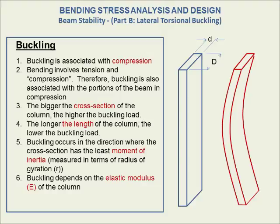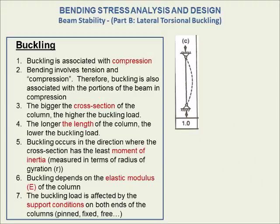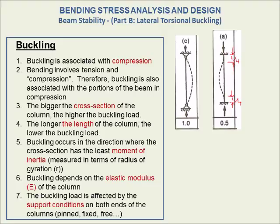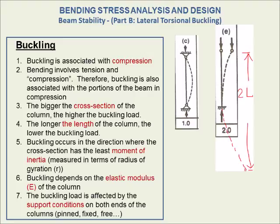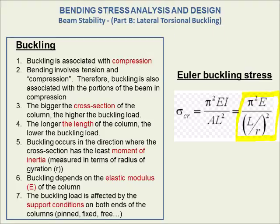From point three onward, we intuited parameters that affect the manner in which buckling is manifested and the buckling load. These parameters are ones we would expect to see in an equation for the buckling load. They include: cross-section, length of the column, moment of inertia and its relative values depending on orientation, elastic modulus, and support conditions represented by the k-factor — the effective length factor.